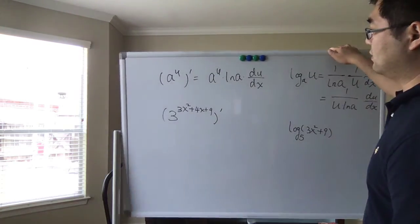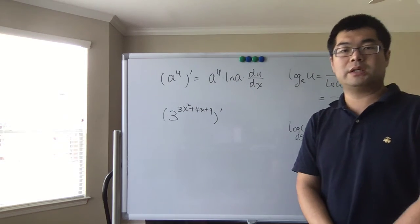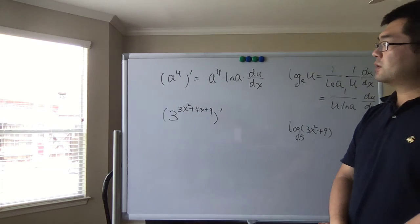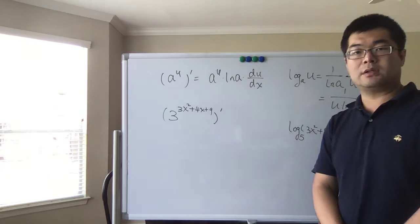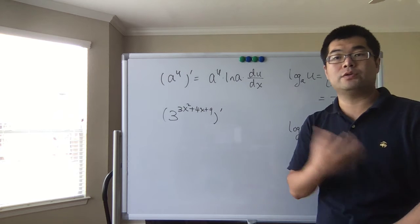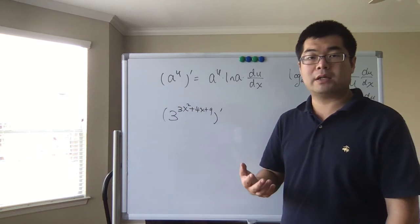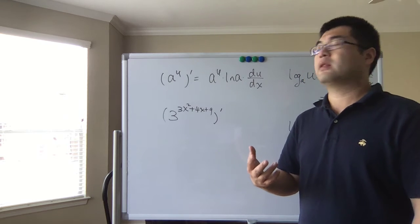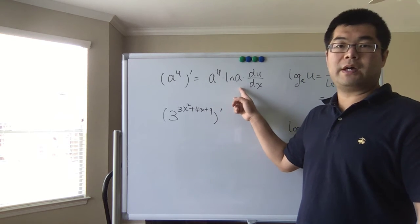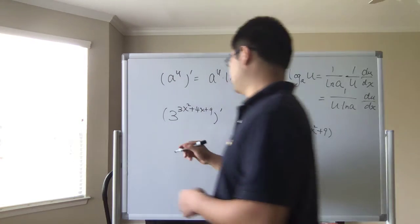We can extend this to a more general situation. If we have a to the power of u, where u is a function of x, the chain rule gives us: the derivative is a to the power of u times ln(a) times du/dx.